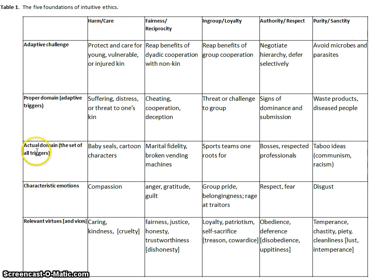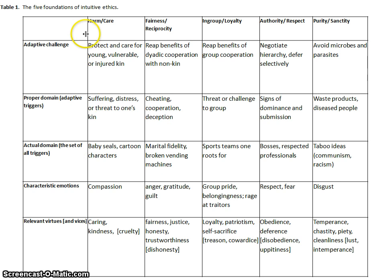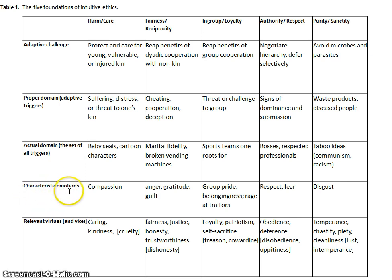The proper domain is the actual situation in the past that would have produced a concern for these five foundations. The actual domain is the set of all triggers. The point here is that today's modern society is a little different from our ancestral situation, and so we may have these five foundations activated by things in our society that were different from what our ancestors experienced.